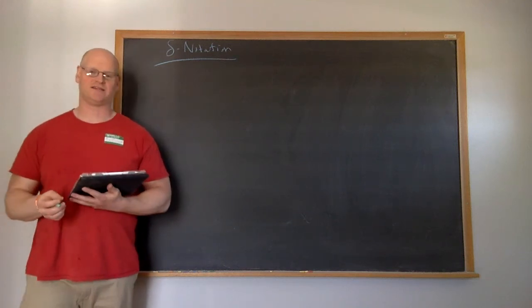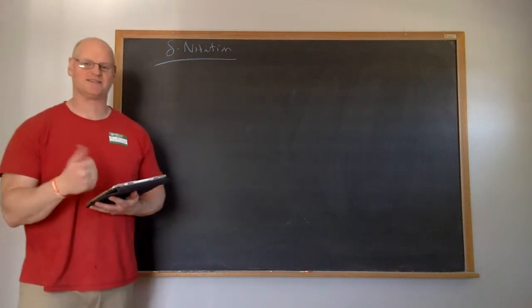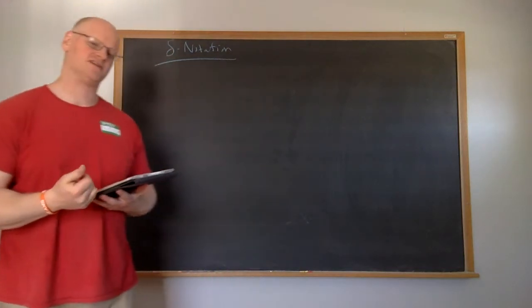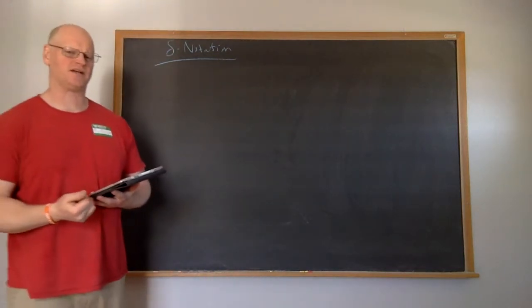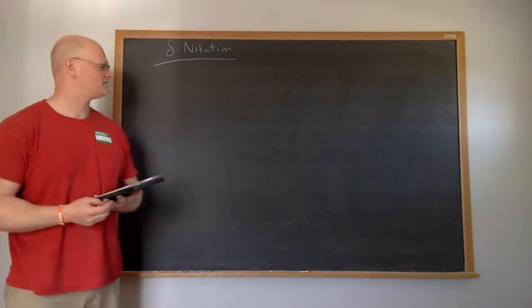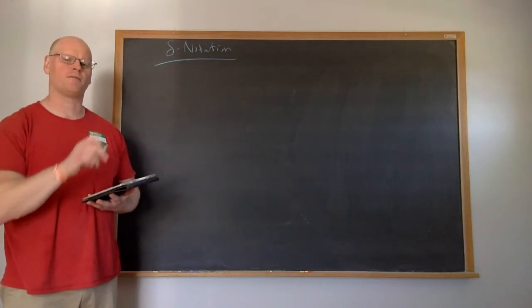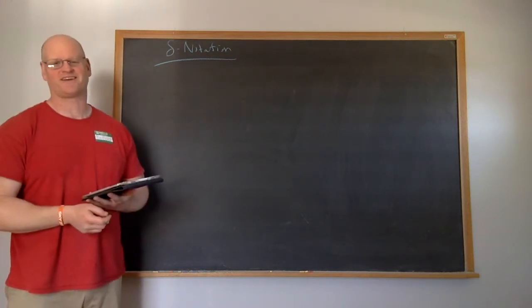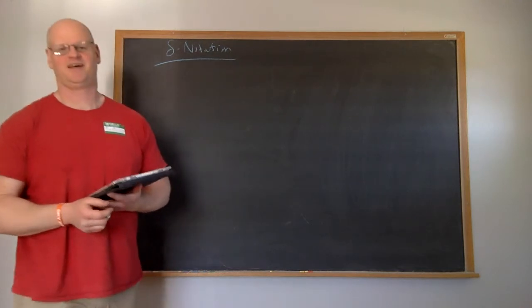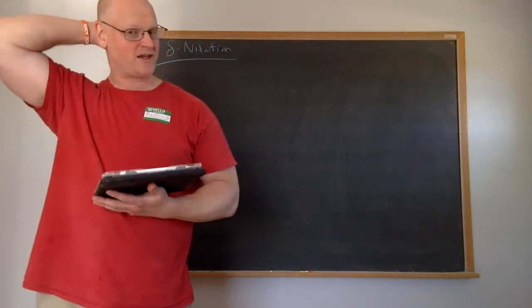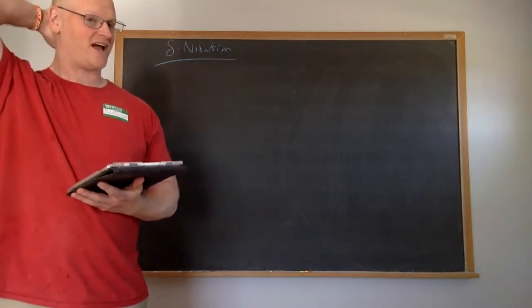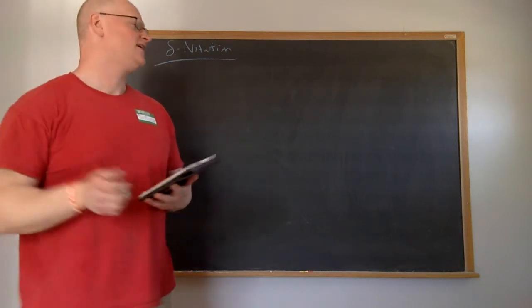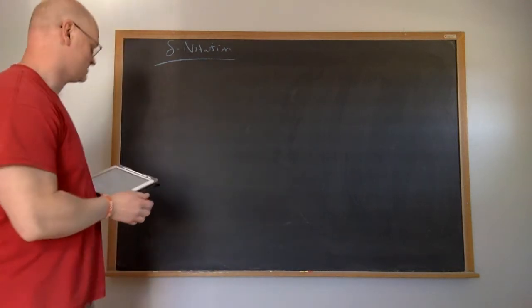The last thing we want to talk about is what's known as the delta notation, which is basically just a shorthand notation. Physicists are pretty lazy about writing out things, as you've noticed when we write out partial derivatives and things like that. We usually don't want to write out the entire thing, so we came up with this new thing called the variation.